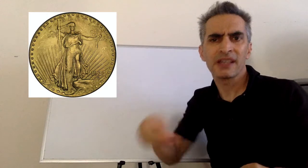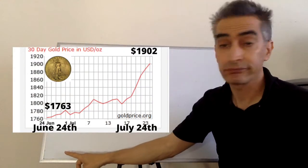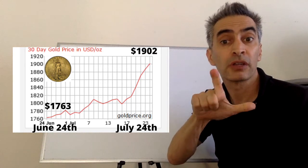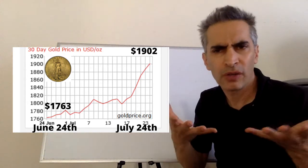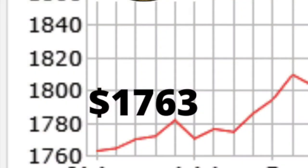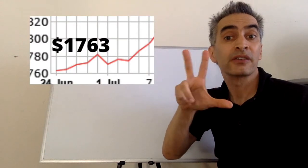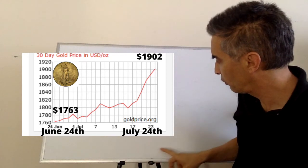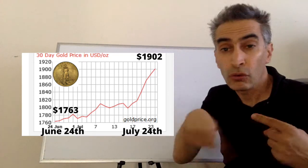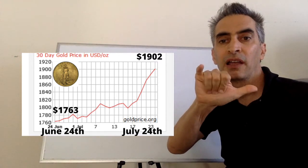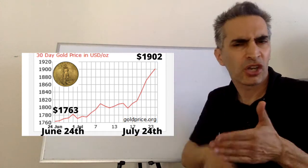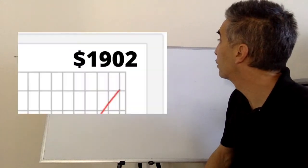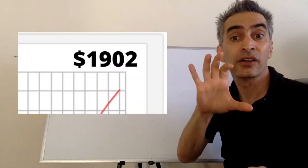Next, we're going to calculate gold. We're going to start on June 24th, and the price was $1,763. Next, we're going to look at July 24th. What was the price on that day? $1,902.